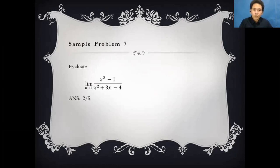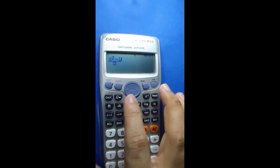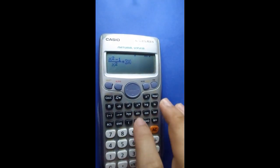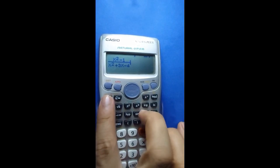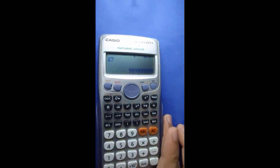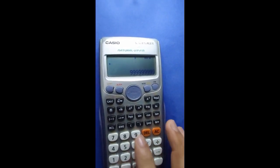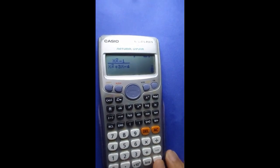For the last problem, we also have a limit, but now x approaches 1. We type the equation — (x squared plus 3x minus 4) over (x minus 1) — then press Calc. Since the approach is to 1, we need to input a value very close to 1, which is 0.99999999, which approaches 1. The answer is 2 over 3.